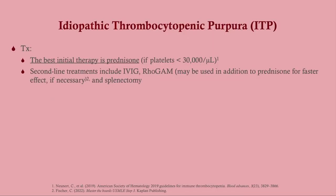Treatment for ITP is prednisone. The recommendation is to treat if the platelet count is below 30,000 or if the patient is symptomatic. This reflects ITP's likely autoimmune nature. Second-line treatment includes IVIG and Rh(D) immune globulin (RhoGAM), which can be added to prednisone for a faster effect if necessary, such as if the patient needs surgery. Splenectomy can also be useful.